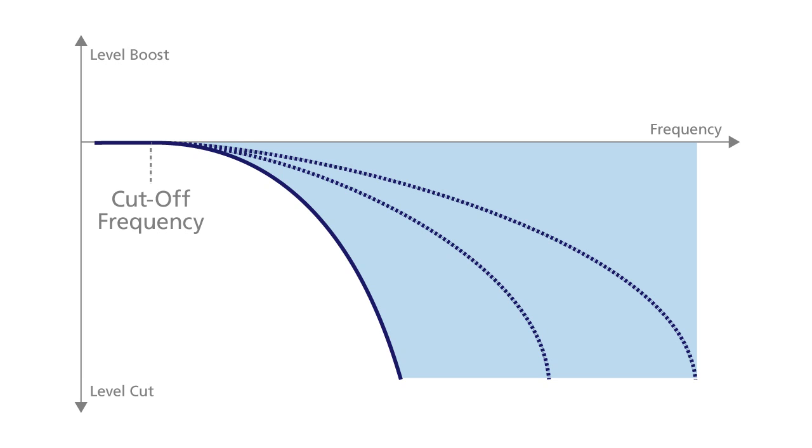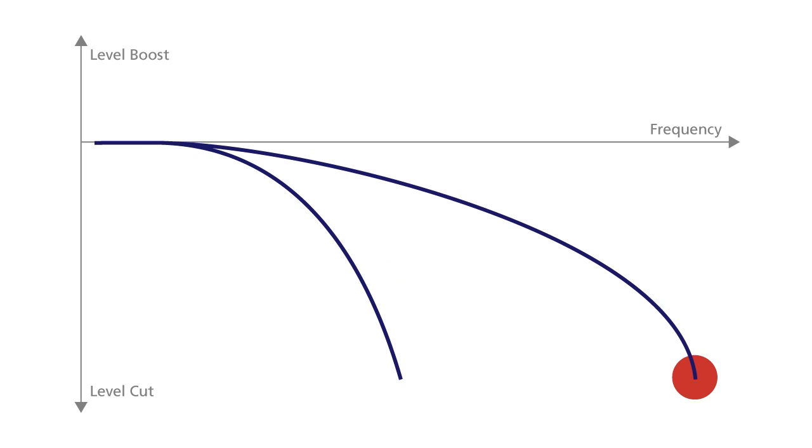On the face of it, a 36 decibels per octave filter may seem to have the most effect. However, if you are looking to have a specified amount of frequency cut at a specified frequency, then in reality, the 12 decibels per octave filter would actually cut more of the signal, thereby having a greater effect on the sound. As you can see in the image, the light blue area is the additional amount of the sound spectrum that is cut by using the more gentle filter slope.